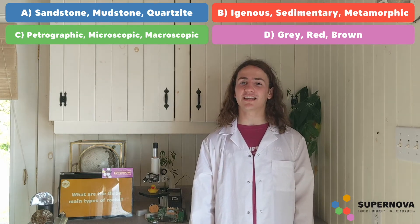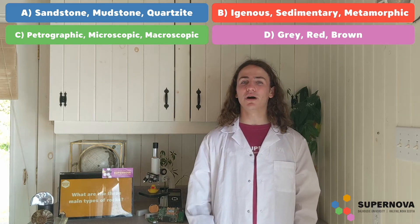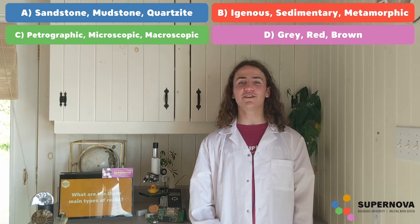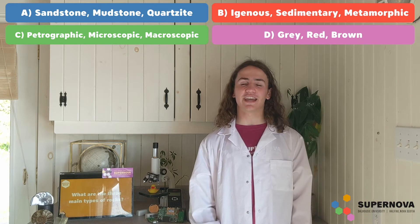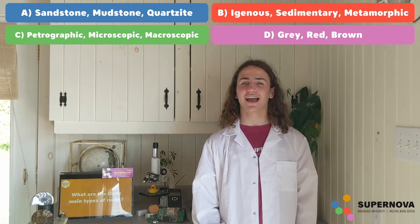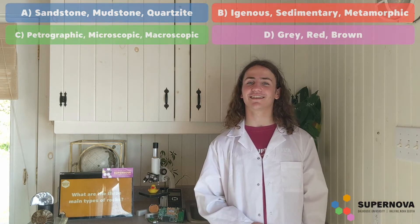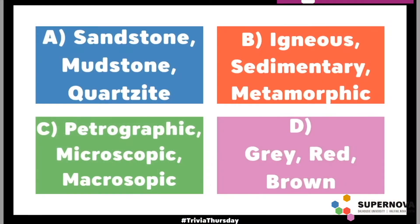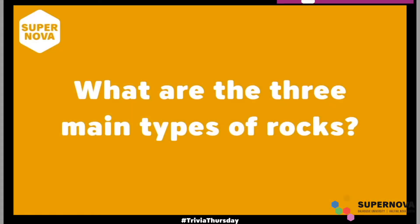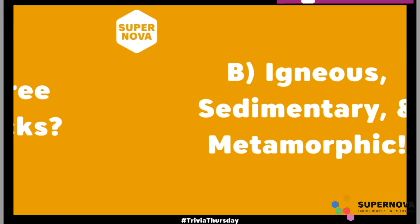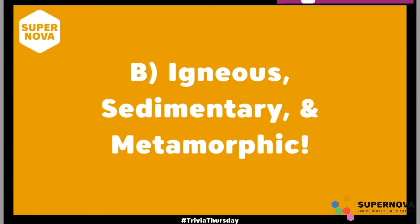I'll give you a minute to think about it, but while you're thinking, see if you can eliminate any answers you think are definitely wrong, and then guess from what you have left. The correct answer to our first question is igneous, sedimentary, and metamorphic.